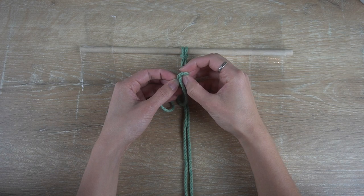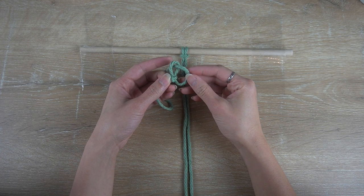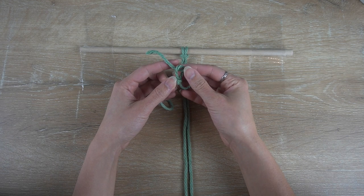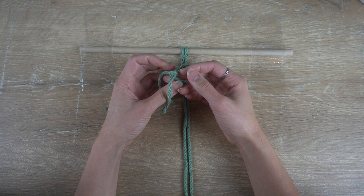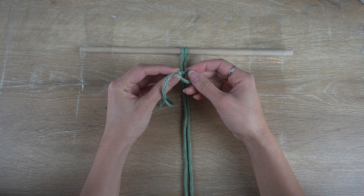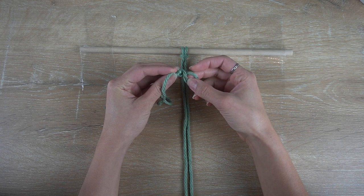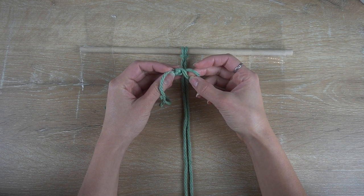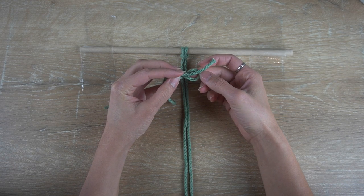Take the right end and weave it through the loop from front back to back. Turn the back side to the front and then twist the right loop and then place the left end through.